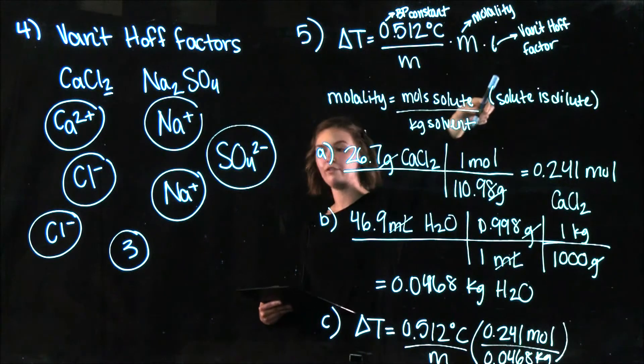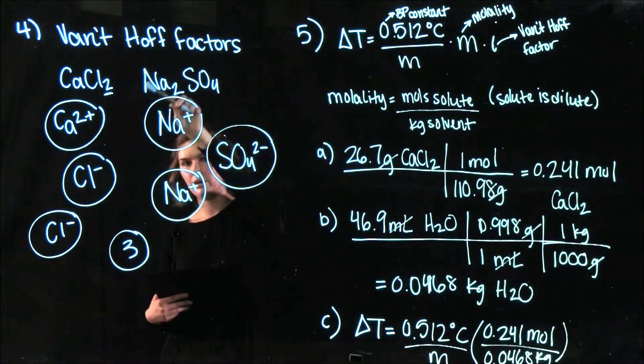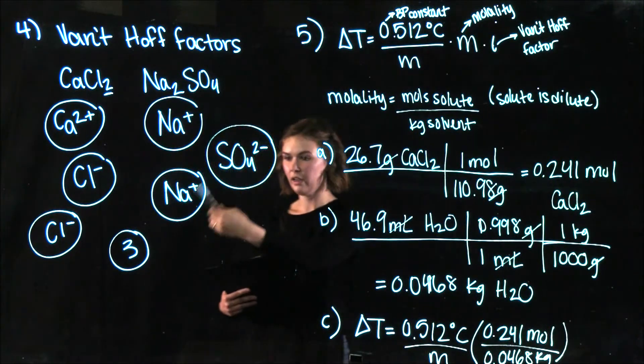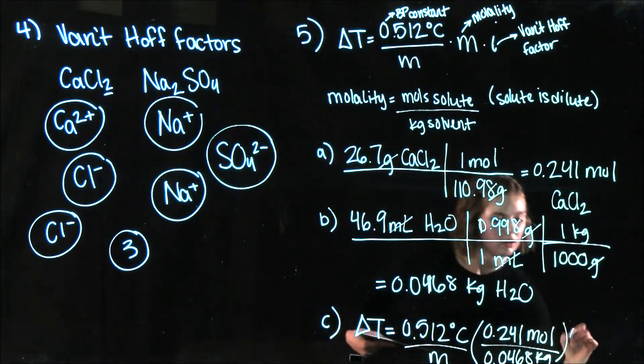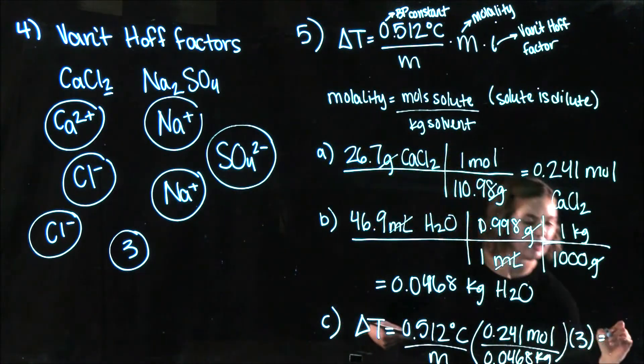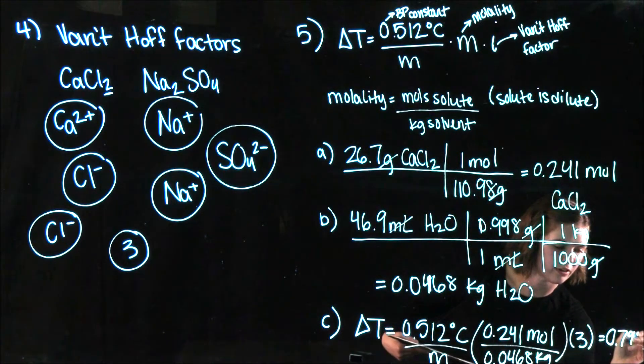And then times our van't Hoff factor which we found over here. No matter which salt you do it's going to be 3 but specifically for calcium chloride is also 3. So, times 3 and we get a boiling point elevation of 0.79 degrees Celsius.